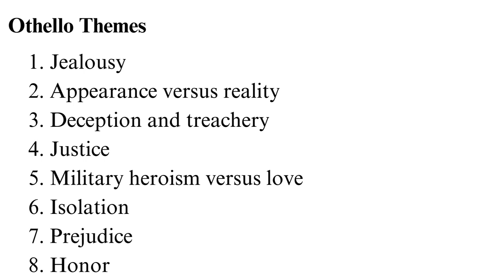Justice: Each of the characters bases their actions on their belief that they deserve justice for certain wrongdoings. For example, Iago believes that he deserves justice against Cassio, who took his role. Brabantio also seeks justice against Othello for marrying his daughter since he does not like him. On the other hand, Othello seeks justice against Desdemona for her perceived unfaithfulness. In the end, both Iago and Othello face justice for the crimes they have committed.